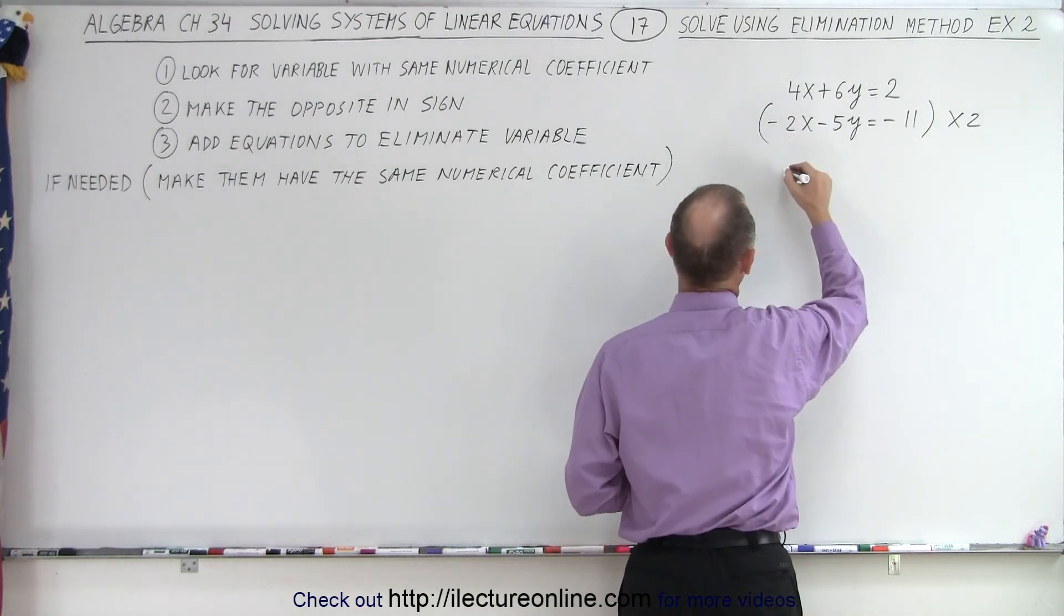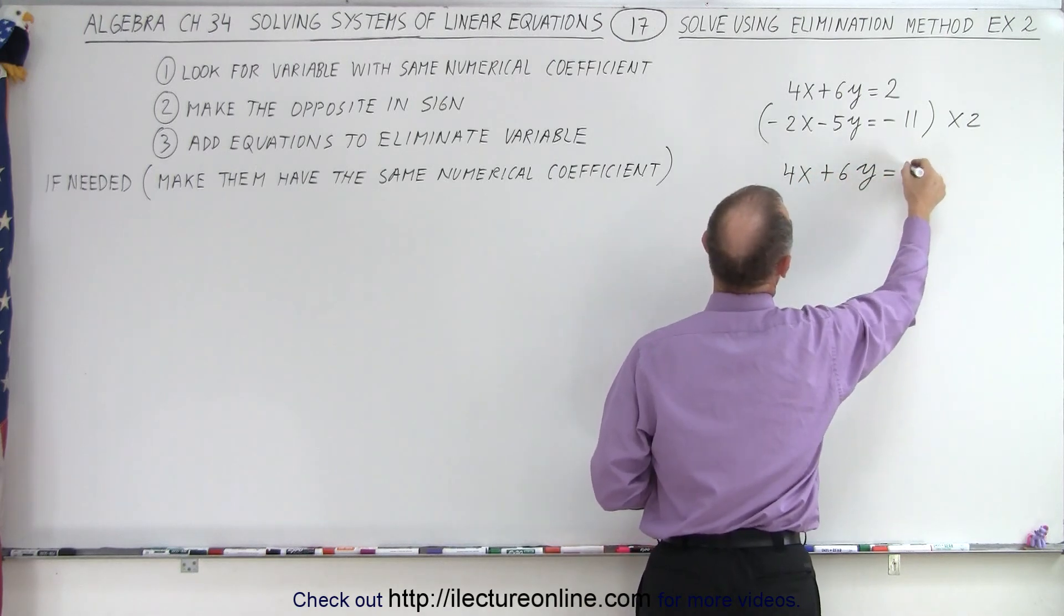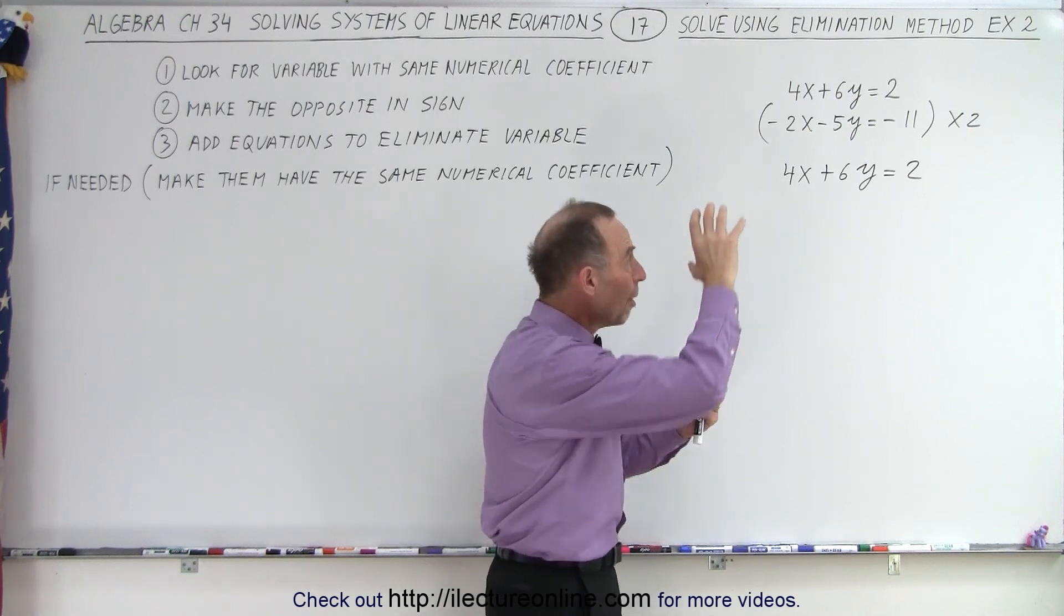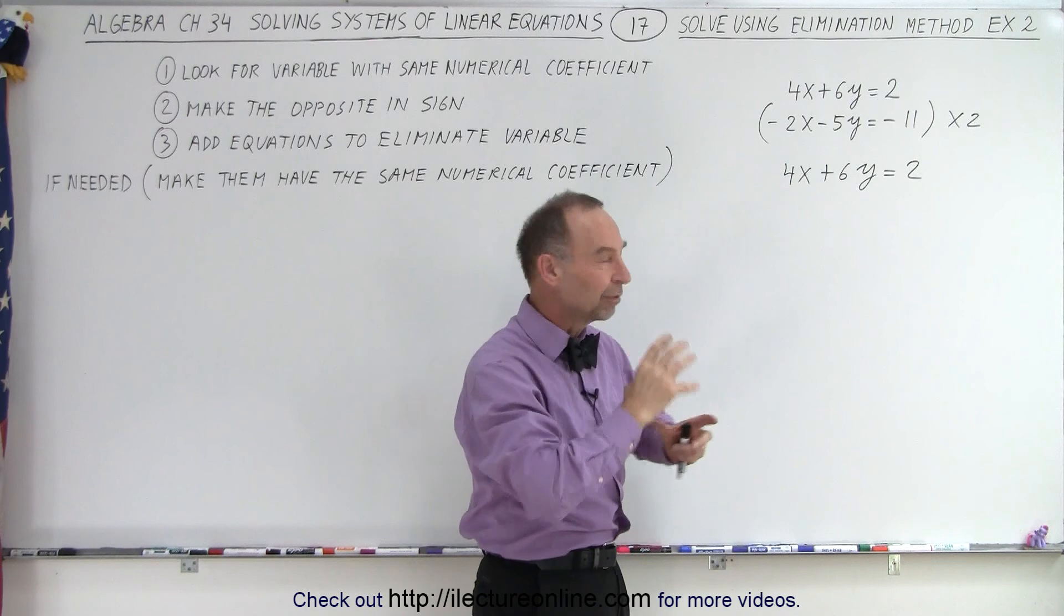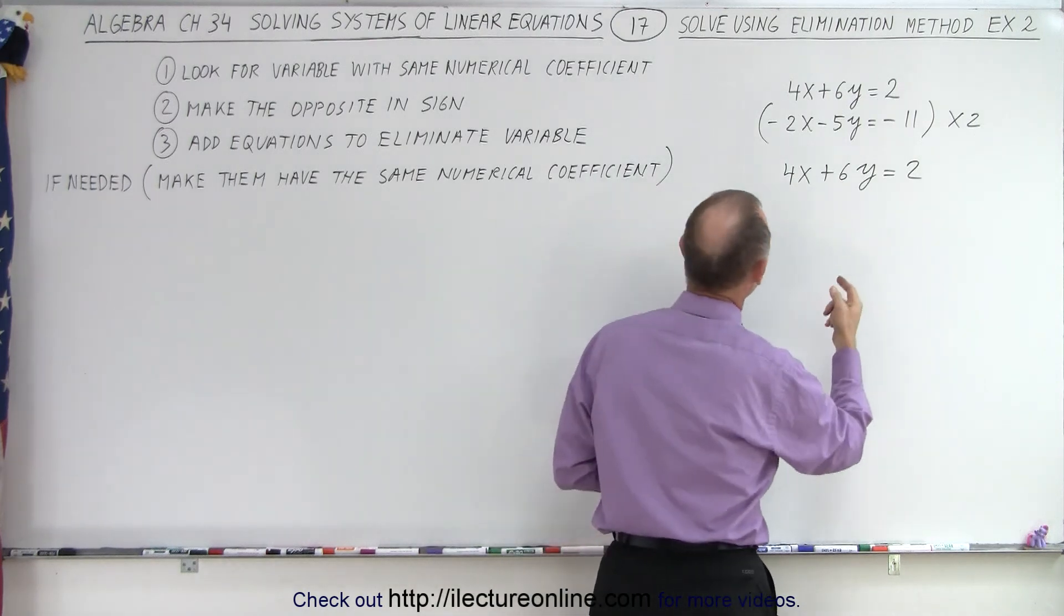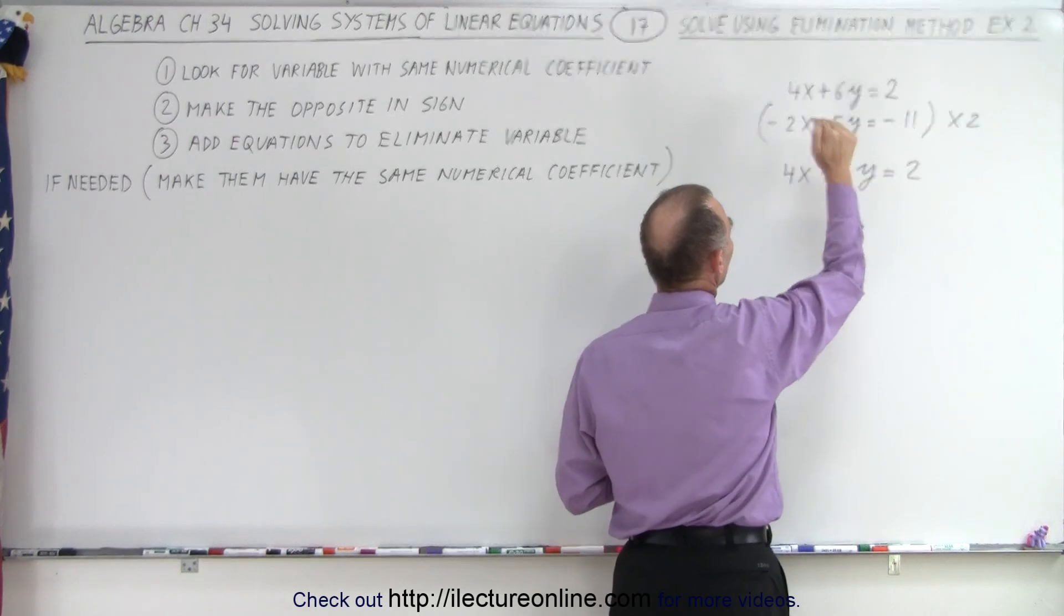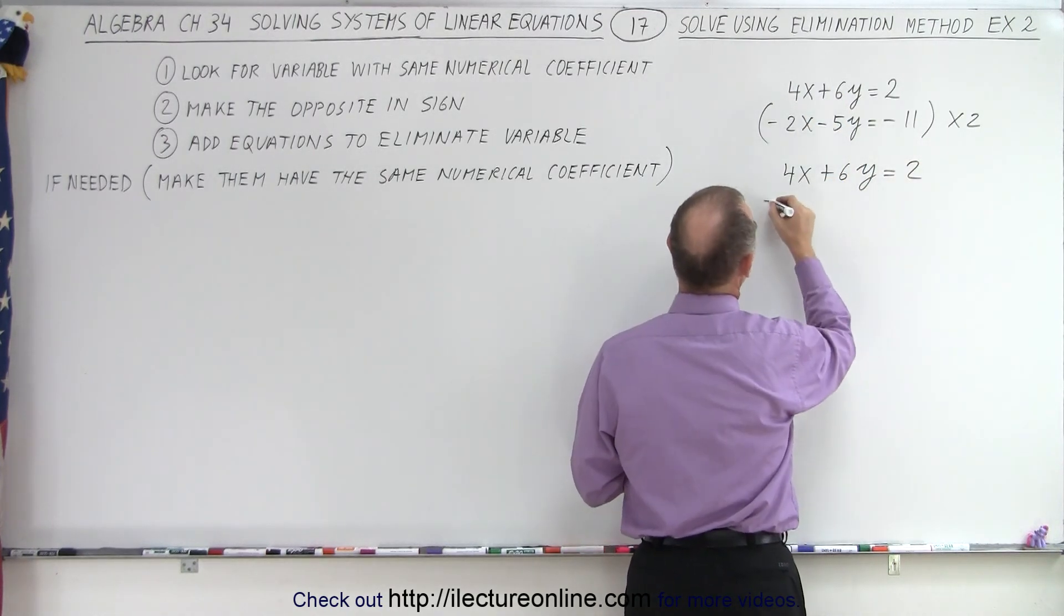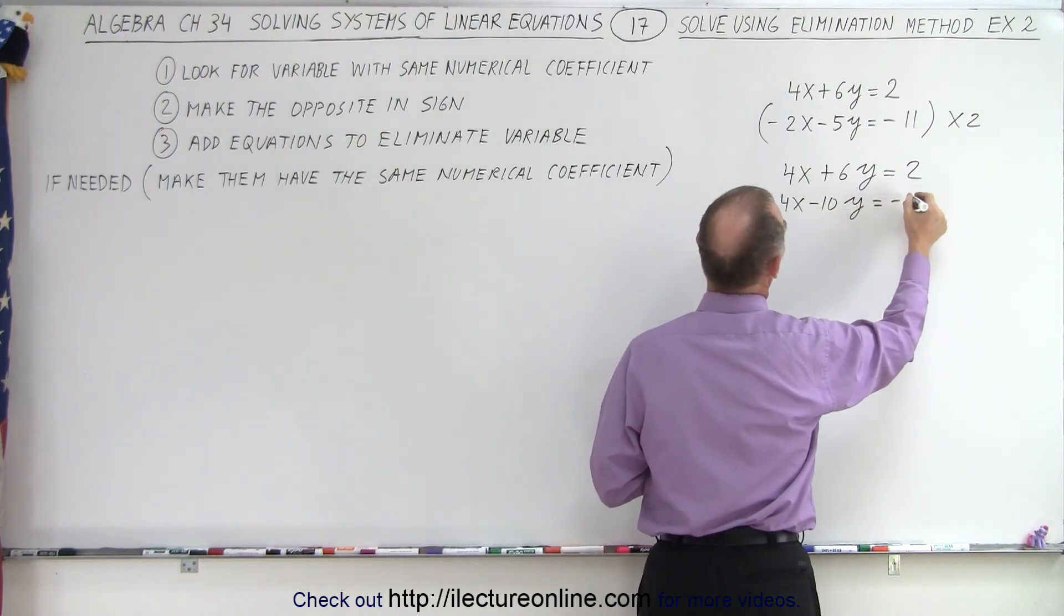So I'm first going to copy the first equation, 4X plus 6Y equals 2. So notice why I do that. I always want to rewrite both of the equations together in a group, otherwise things get a little bit confusing. So I rewrite the first equation. Now I write the second equation when I multiply everything by 2. So we get minus 4X minus 10Y equals minus 22.